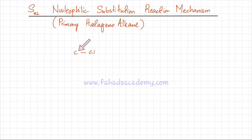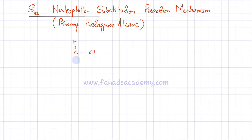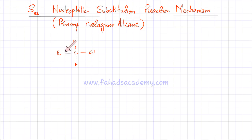A carbon atom is usually making four bonds. In a primary halogonoalkane, this carbon atom which is bonded to the halogen — on two sides there would be hydrogens, and on the third side there is going to be a carbon chain or the rest of the molecule, represented by R. So the carbon on which the halogen is bonded should be bonded to two hydrogen atoms, with the rest of the molecule on one side. It could be a hydrogen as well, but at least on two sides there should be two hydrogens present.